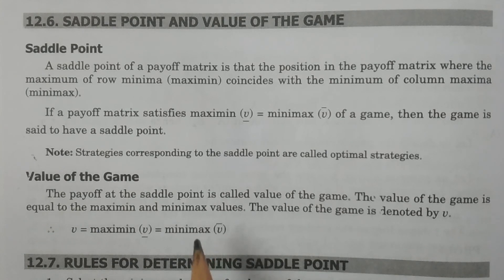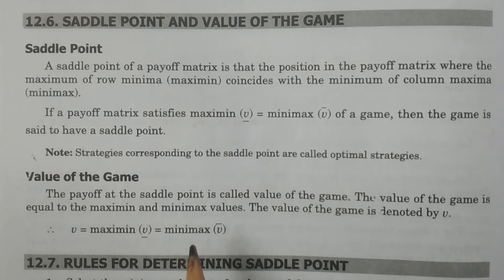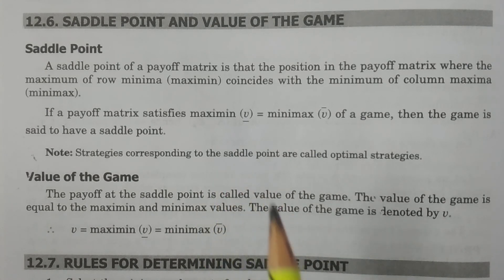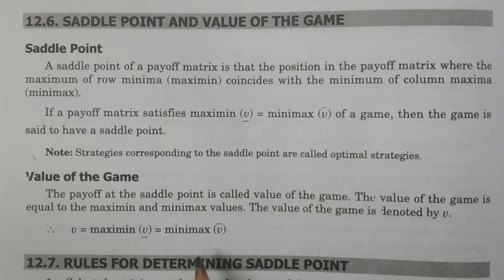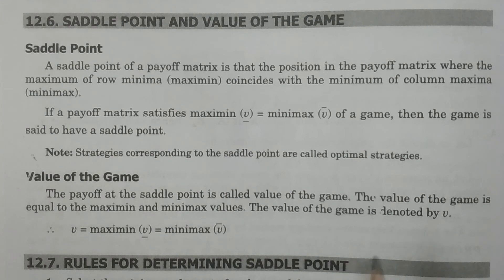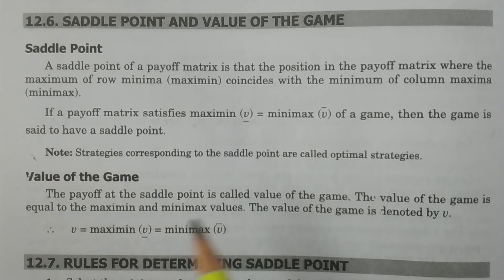From the minimax and maximin principle, the value at the maximin point is called the maximin value, and the value at the minimax point is called the minimax value. When the saddle point exists, the value of the game — denoted by mu — is equal to both the maximin value (mu underscore) and the minimax value (mu upper score). These are the two important definitions: saddle point and value of the game.